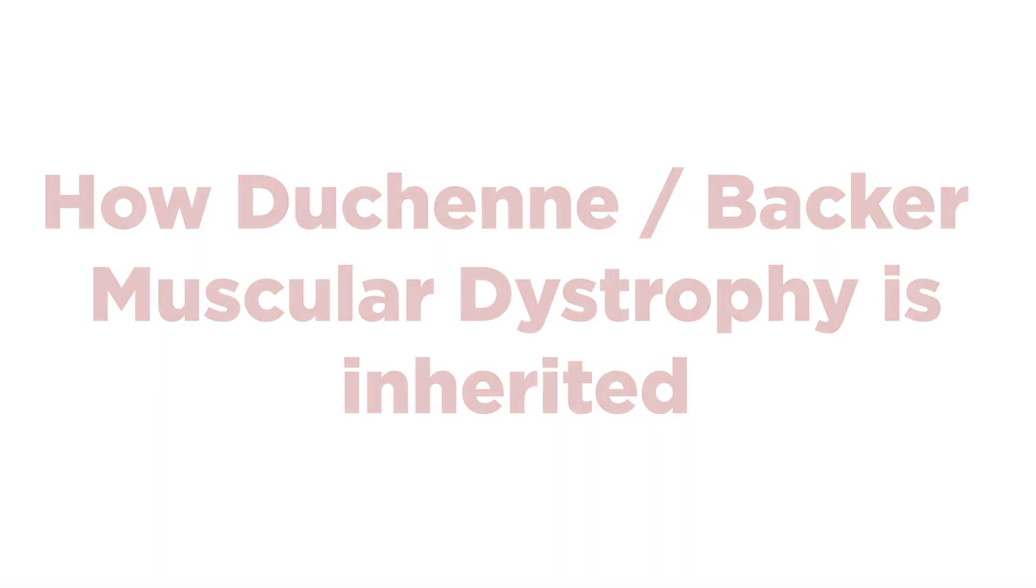Like any other sex-linked disorder, the dystrophin gene that causes the disorder is on the X chromosome. Girls have two X chromosomes and therefore two dystrophin genes.